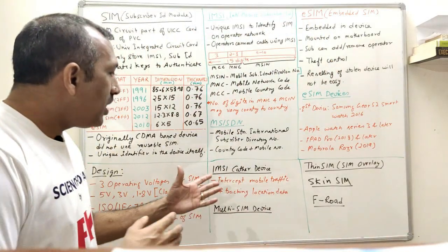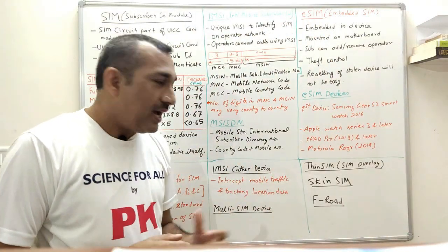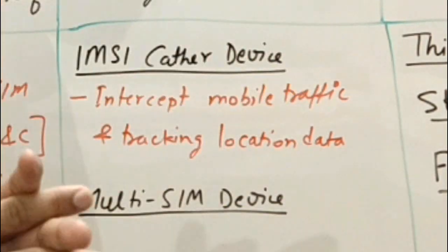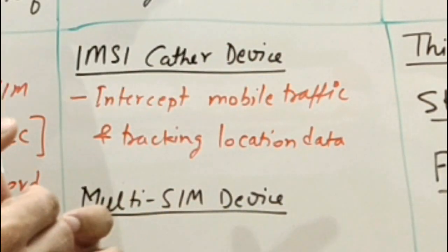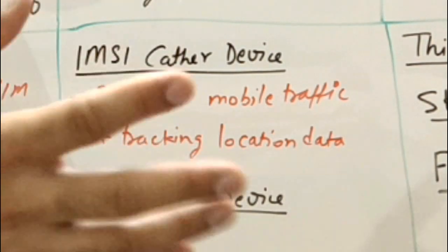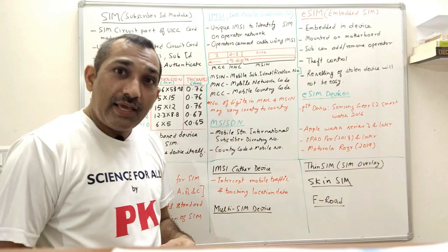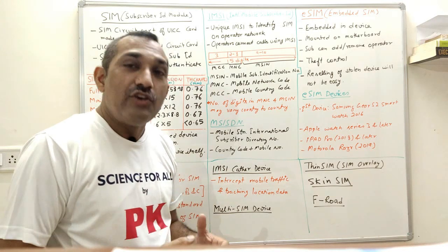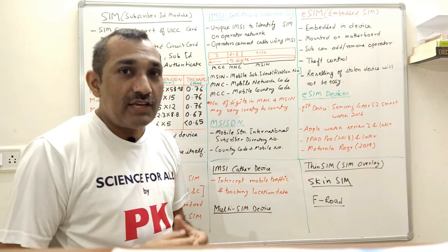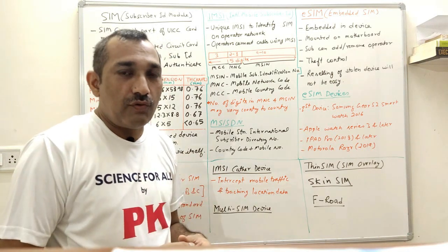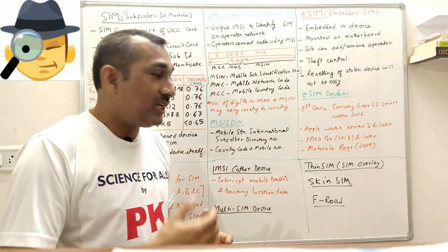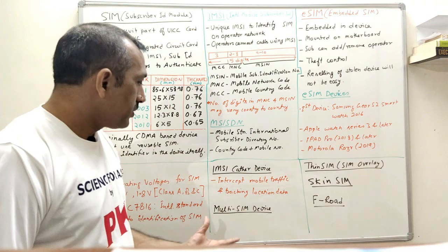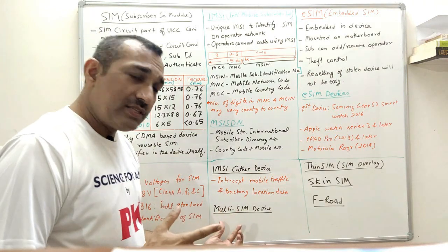What is an IMSI catcher device? These devices can intercept mobile traffic and obtain IMSI information, allowing tracking of a device. They are normally used for spying, or by authorities to locate and track devices.